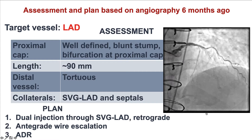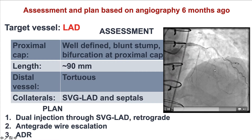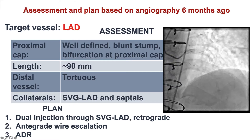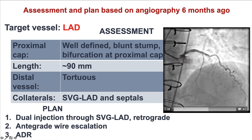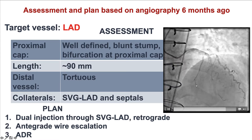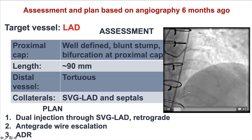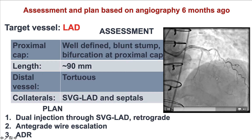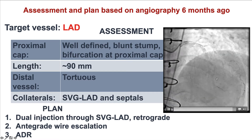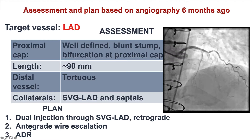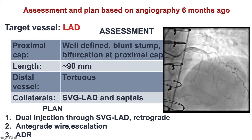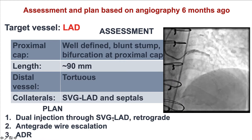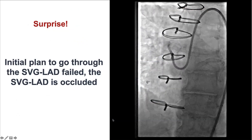The initial plan was to proceed with dual injection through the vein graft to the LAD, potentially use retrograde crossing through the vein graft to the LAD, and then use antegrade wire escalation or ADR selectively as needed.